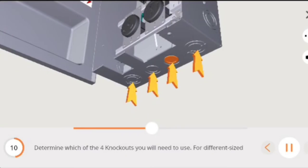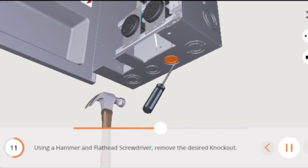Determine which of the four knockouts you will need to use. For different sized conduits, use the concentric knockouts. Using a hammer and flathead screwdriver, remove the desired knockout.